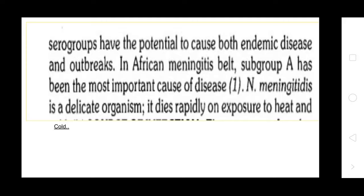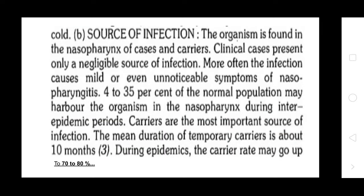This bacterium is called Meningococcus. It is found in the upper respiratory tract, but when it enters blood circulation it becomes pathogenic. Meningococcus is a delicate organism — it dies rapidly upon exposure to heat and cold.